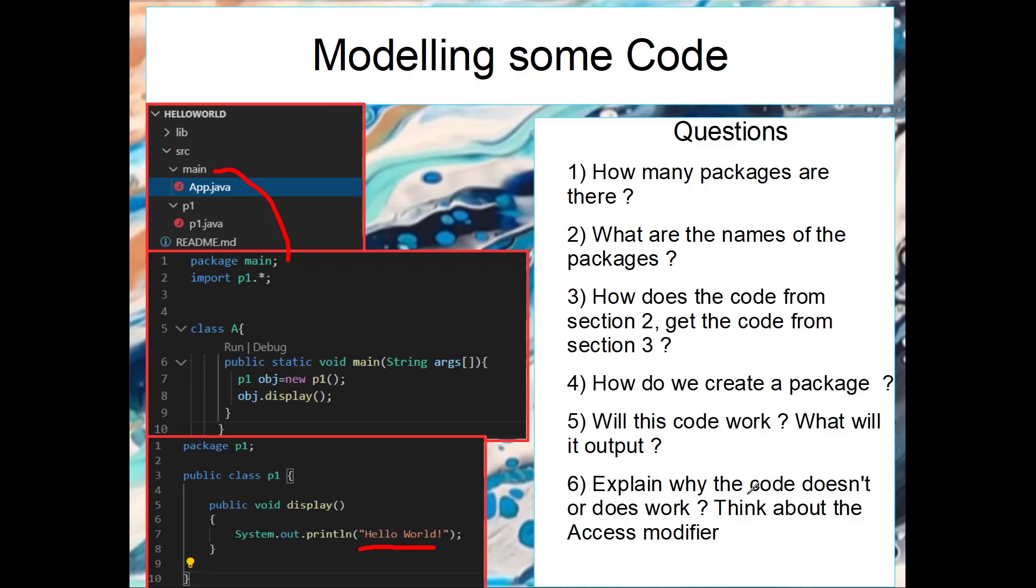Explain why the code will work. And think about access modifier. Well, for us to get this information here, we have to declare this public. Because remember, this means that we can access this method from outside our own package and it's outside our class. So this is why it will work, because we've chosen the correct access modifier.